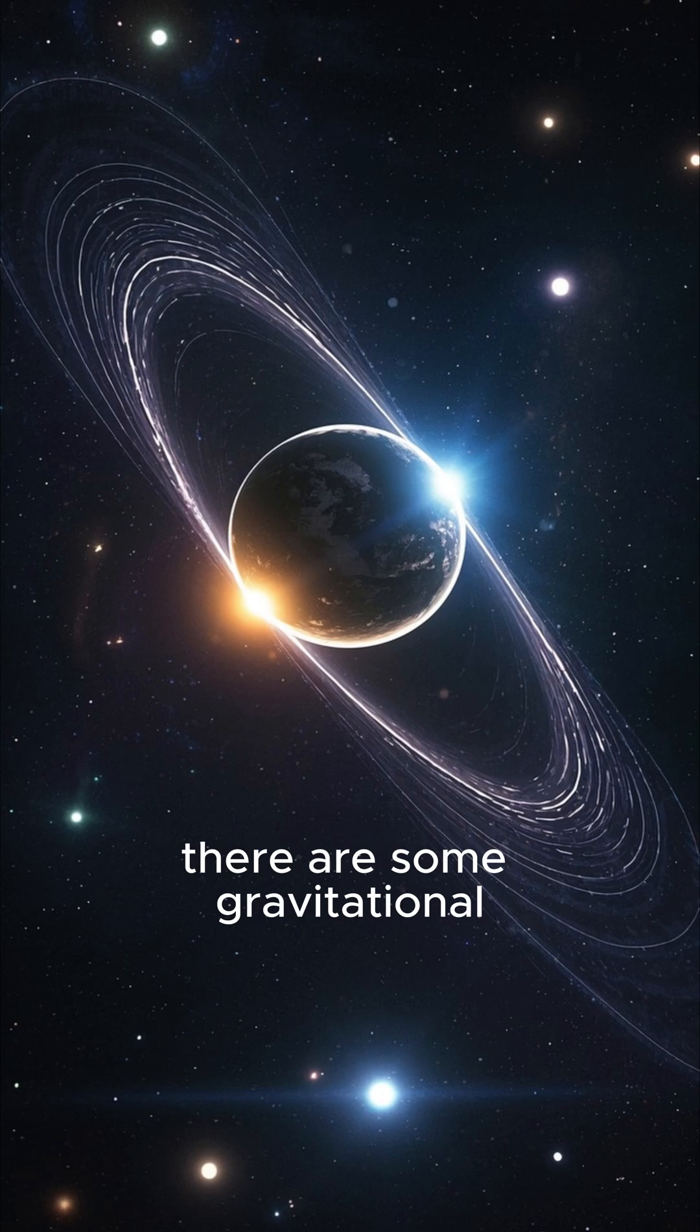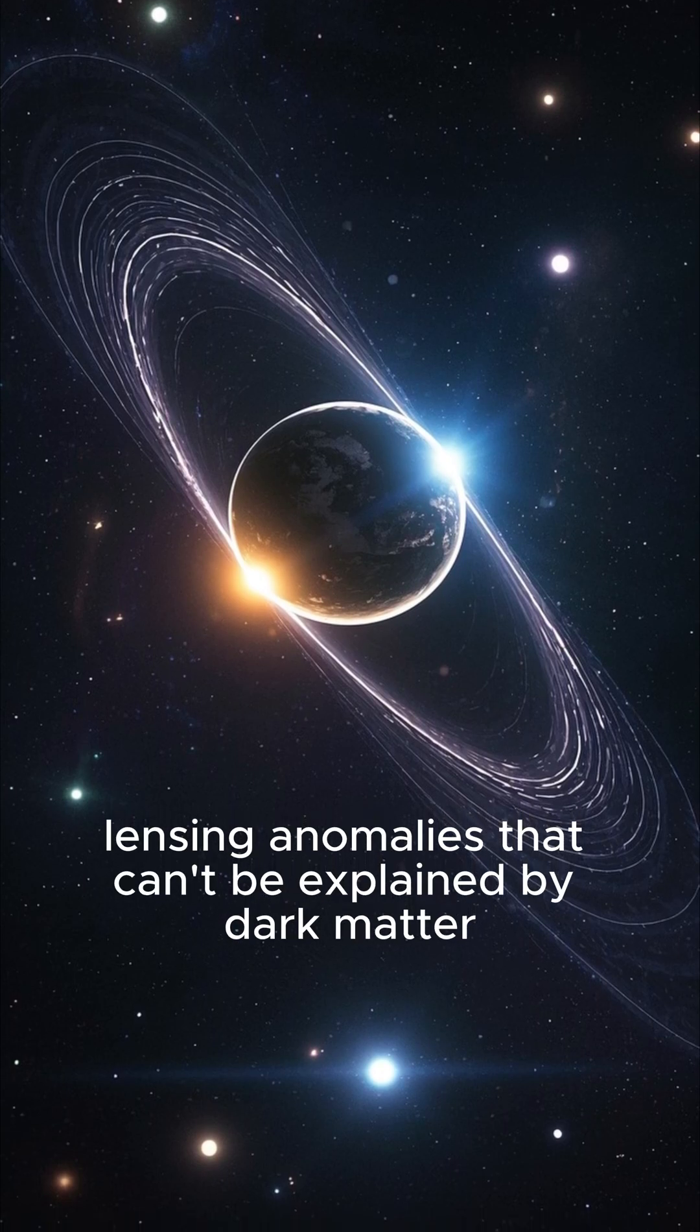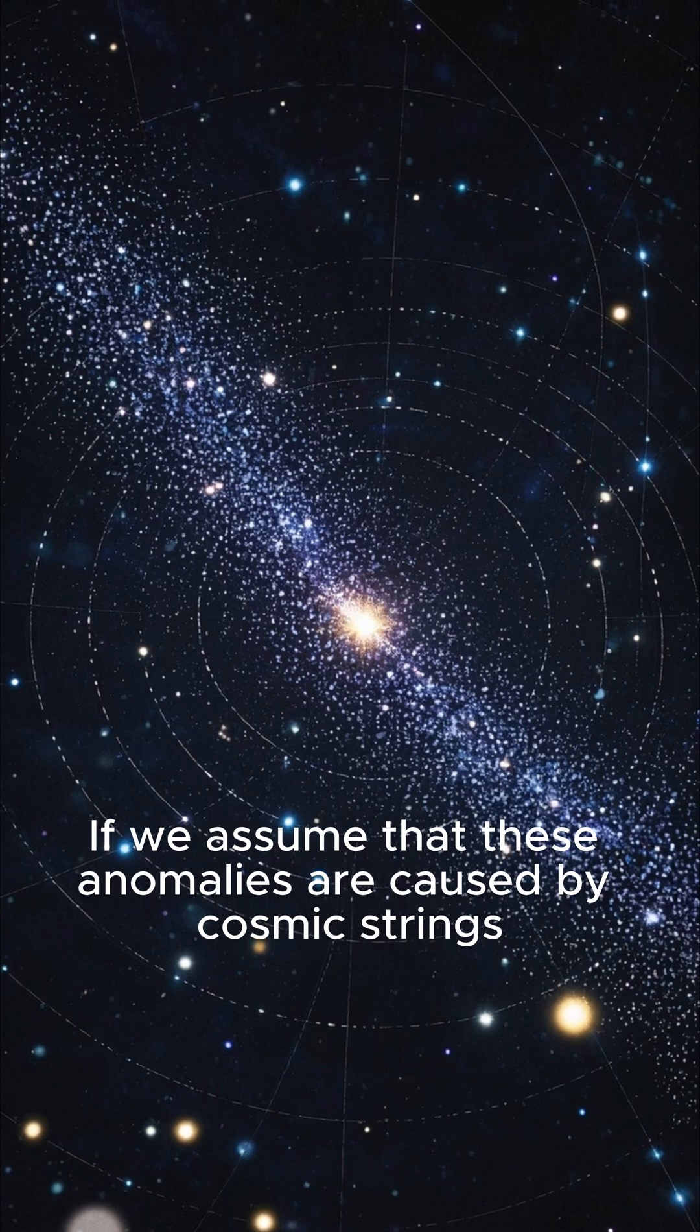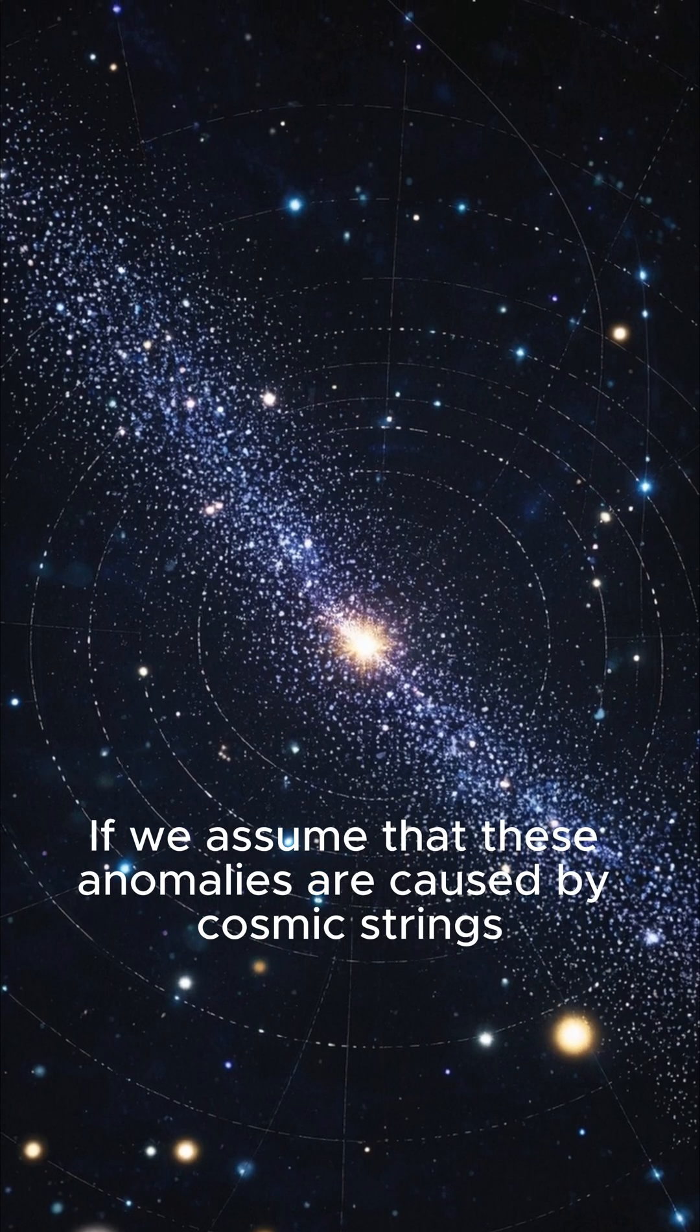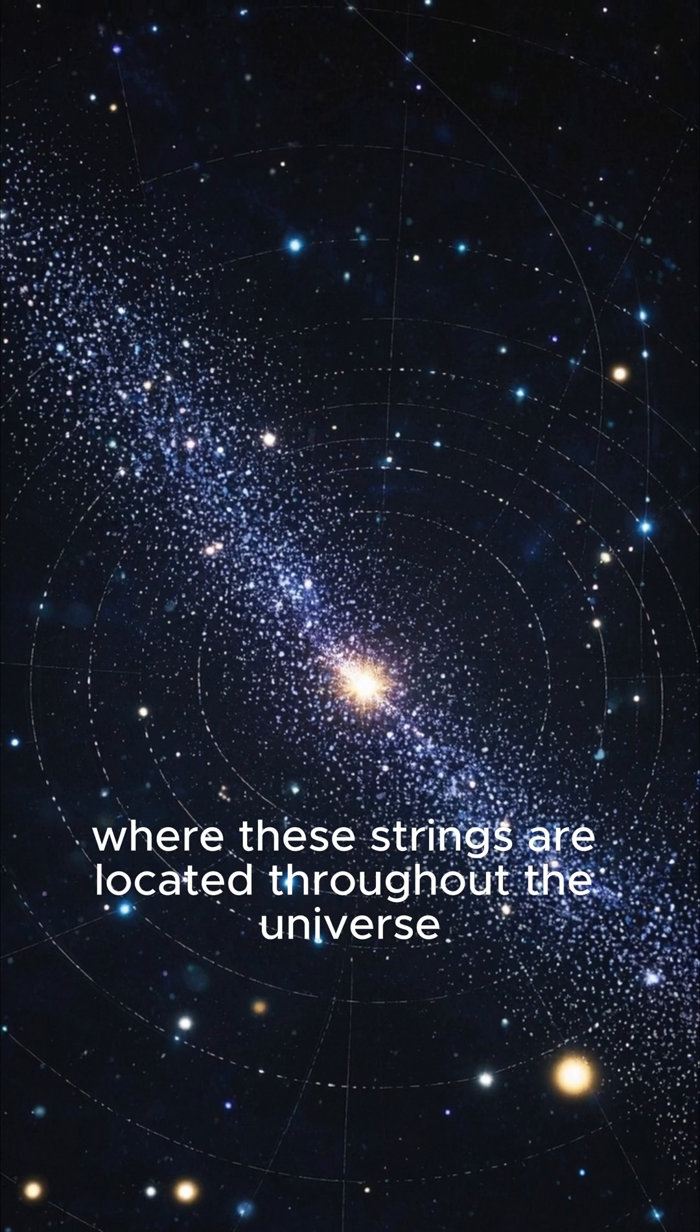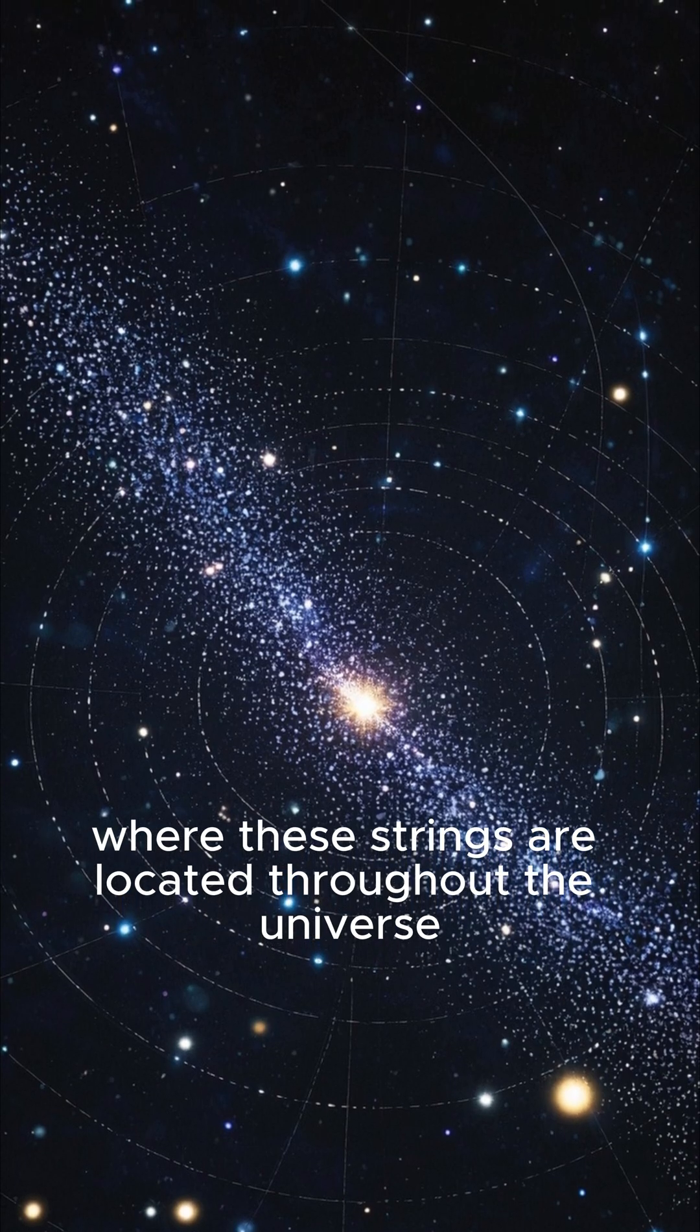There are some gravitational lensing anomalies that can't be explained by dark matter. If we assume that these anomalies are caused by cosmic strings, then we can actually use them to map out where these strings are located throughout the universe.